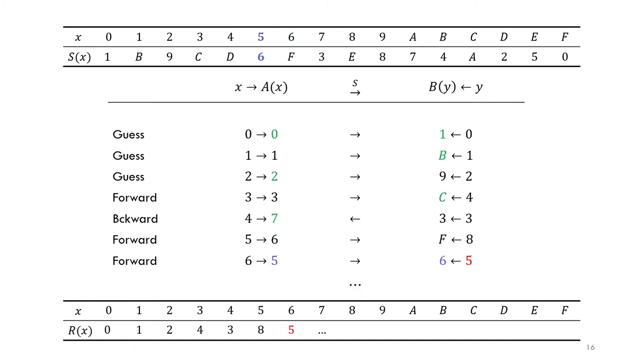But remember, we made some guesses. To find the absolute smallest representative, we have to repeat this process for every possible guess. For example, in this case, we chose A of 1 equals 1, and it resulted in a representative that goes 0, 1, 2, 4, 3, etc.